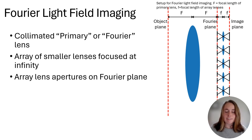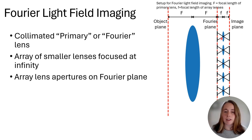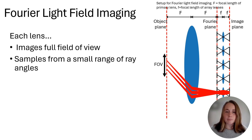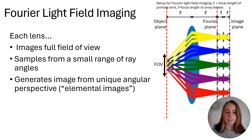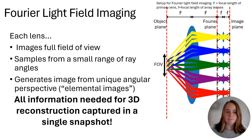Before I explain more about the design of our system, I want to explain how Fourier light field imaging works. In its simplest form, a Fourier light field imaging system consists of a large primary lens, often referred to as the Fourier lens, which is collimated and placed in a 4F configuration with an array of smaller lenses. The technique is called Fourier imaging because the apertures for the array lenses are at the Fourier plane of the primary lens. When the lenses are placed in this configuration, each lens captures light from every point in the field of view, but from only a small range of ray angles. In this way, each lens generates an image of the full sample from a unique angular perspective, and each of these individual images is referred to as an elemental image. All the information needed for 3D reconstruction is acquired in a single snapshot, which allows for high frame rate 3D video.